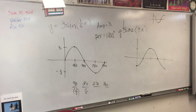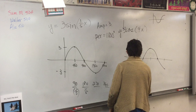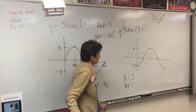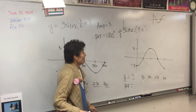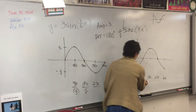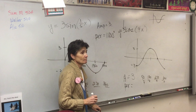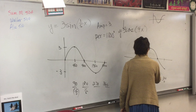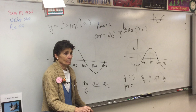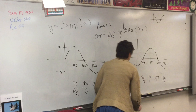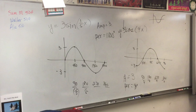The negative just flips it — it doesn't change the amplitude. The amplitude is 3, so the labels are 3 and negative 3. The labels are supposed to be 90, 180, 270, 360, but there's a number in there so these labels have all been divided by that number. My new labels are 22.5, 45, 67.5, and 90. So my period is 90 degrees.